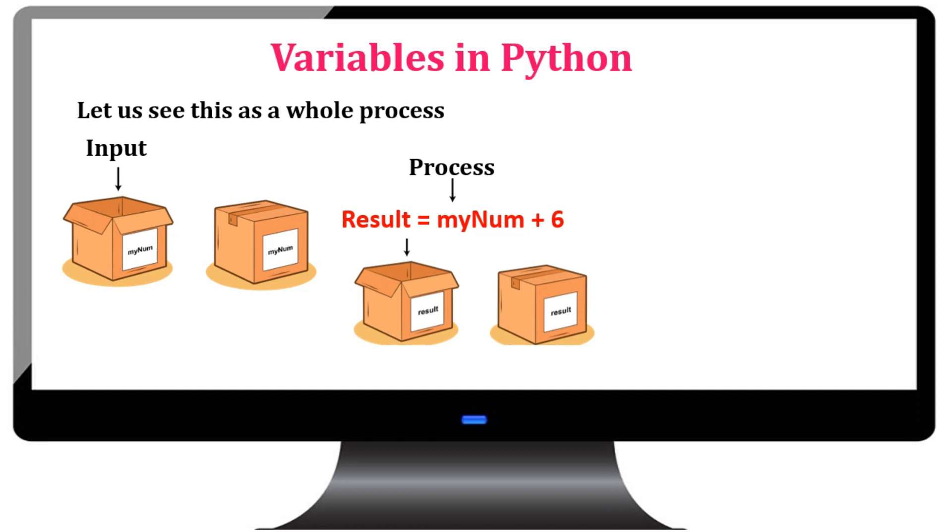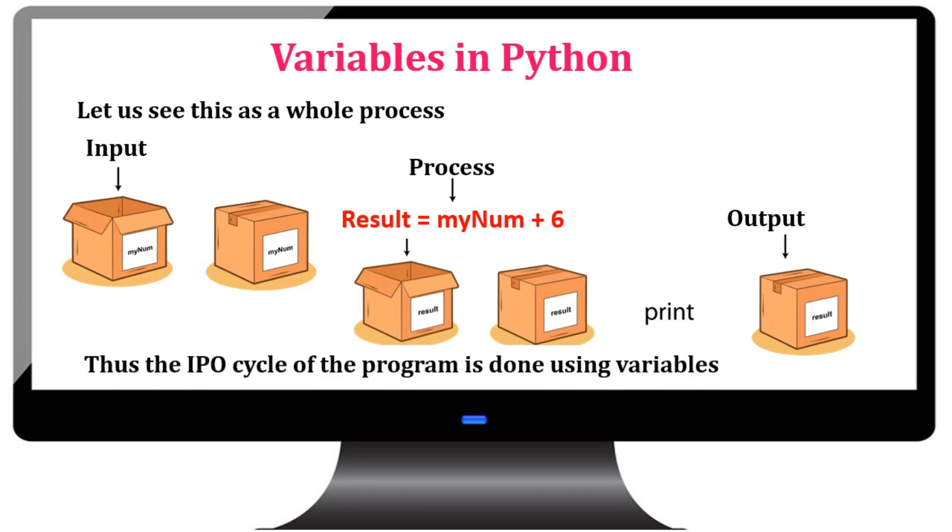Now, the process will take place. By referring the mynum variable in the memory, the value 5 will be retrieved and added to the value 6. The added value will be stored in the variable called result. Finally, the answer will be taken from the variable result and printed as output.